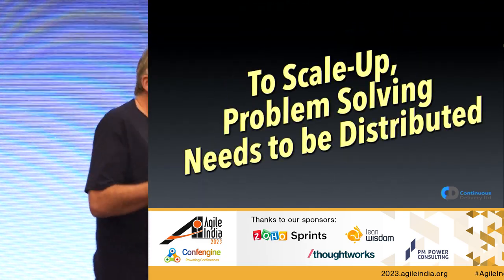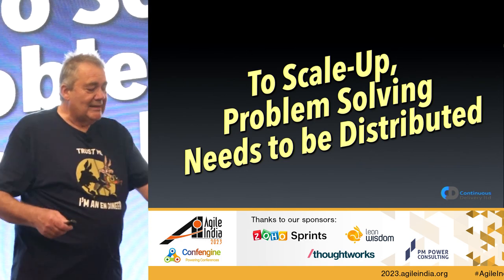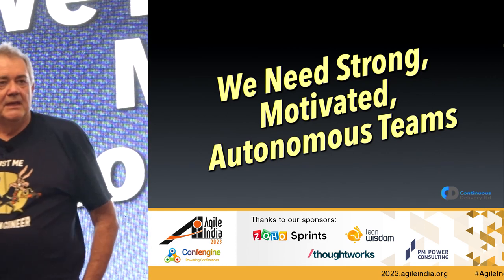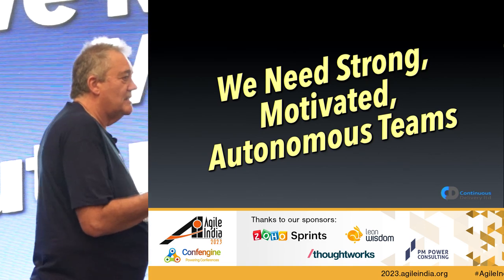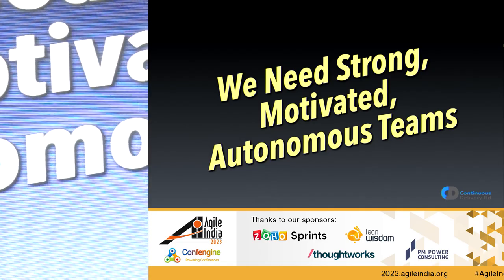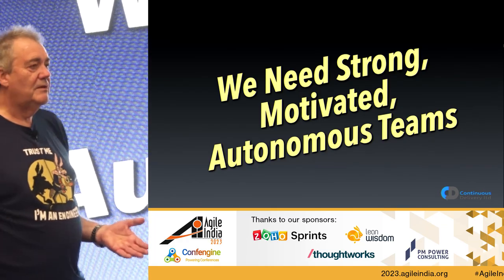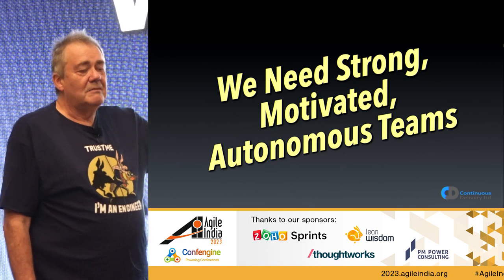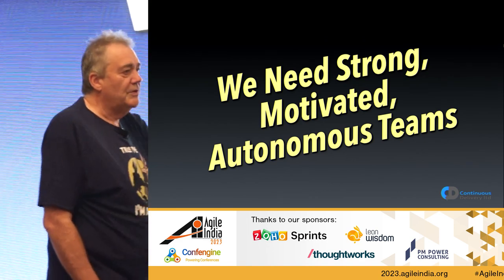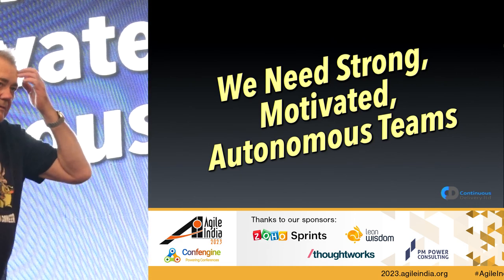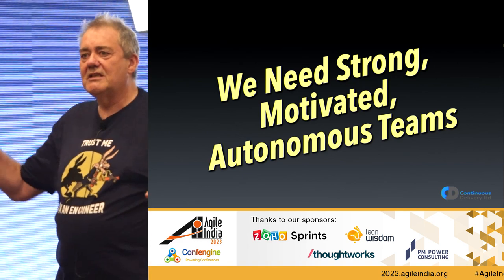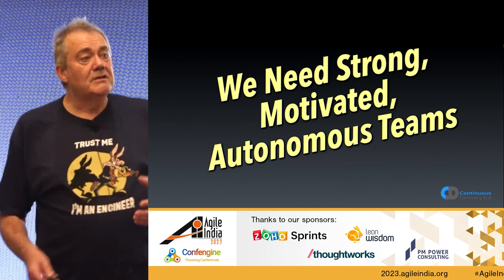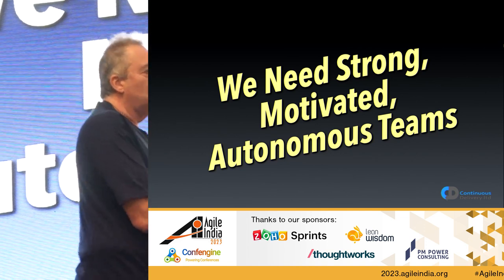To scale up, problem solving needs to be distributed. We need strong, motivated, autonomous teams that take responsibility. This is borne out by the State of DevOps research. Their data says one of the strongest predictors of high scores in stability — measuring quality — and throughput — the rate of producing that quality — is the team's ability to make its own decisions: making progress without coordinating or asking permission from anyone outside the team. Those are very different teams to what we often see in organizations.